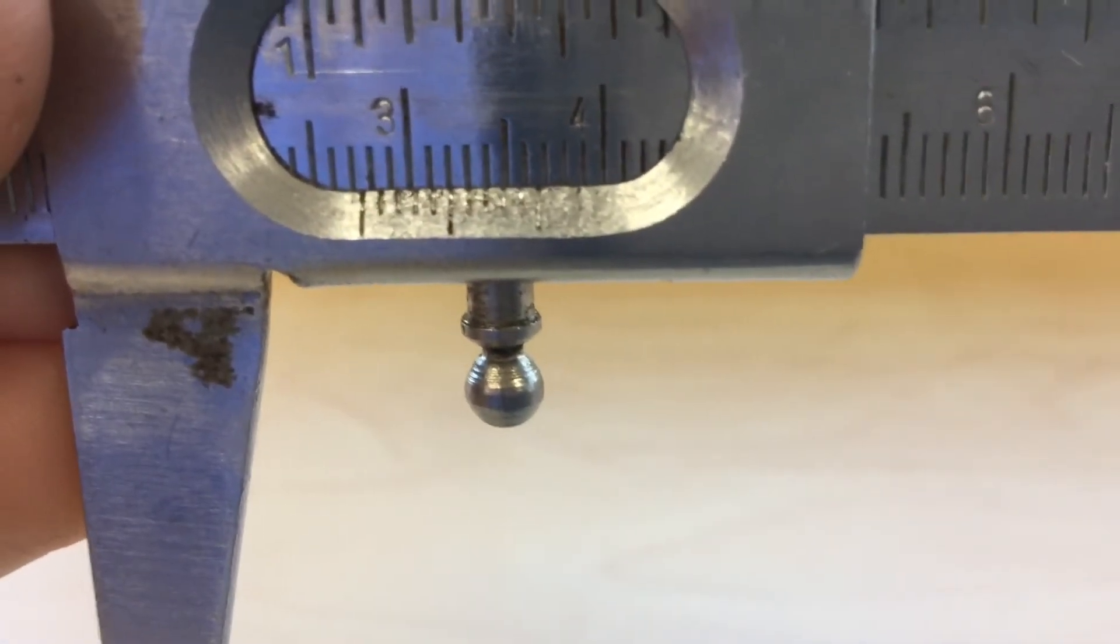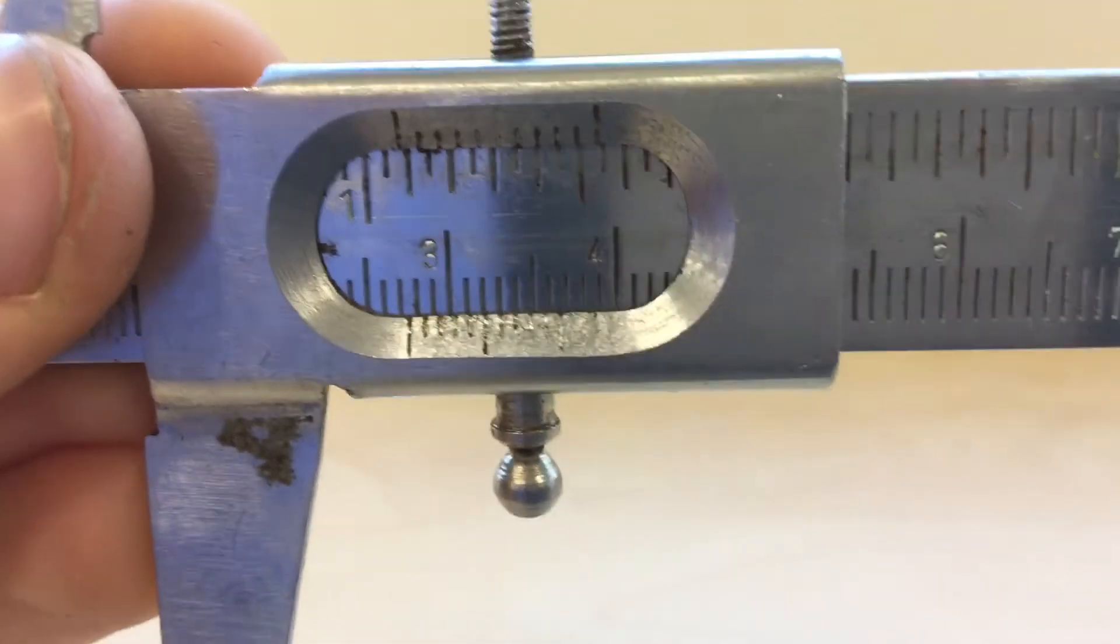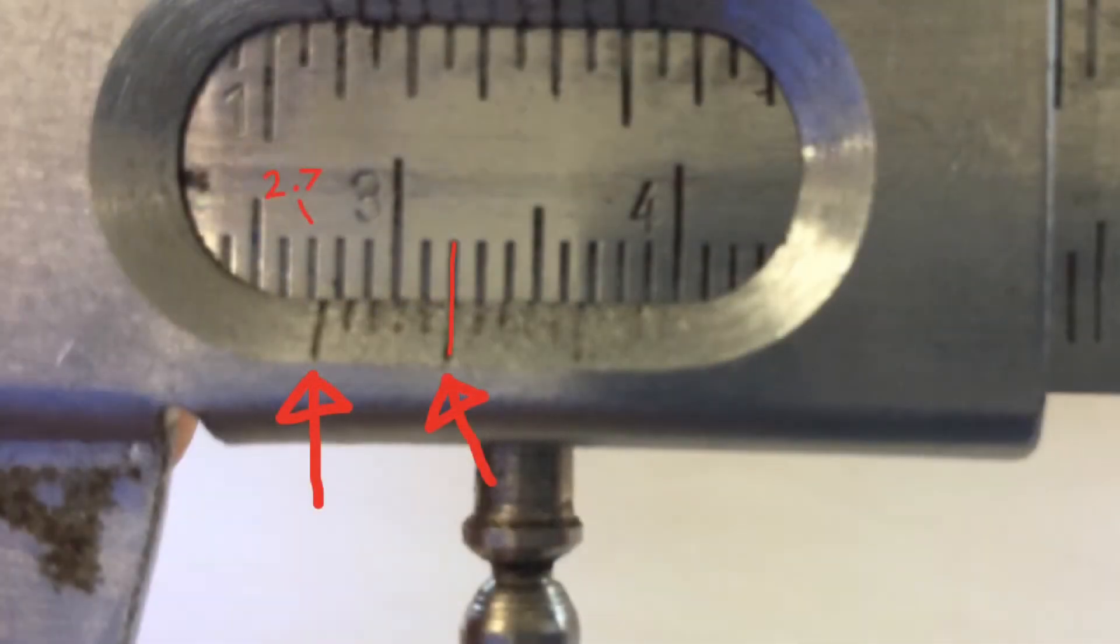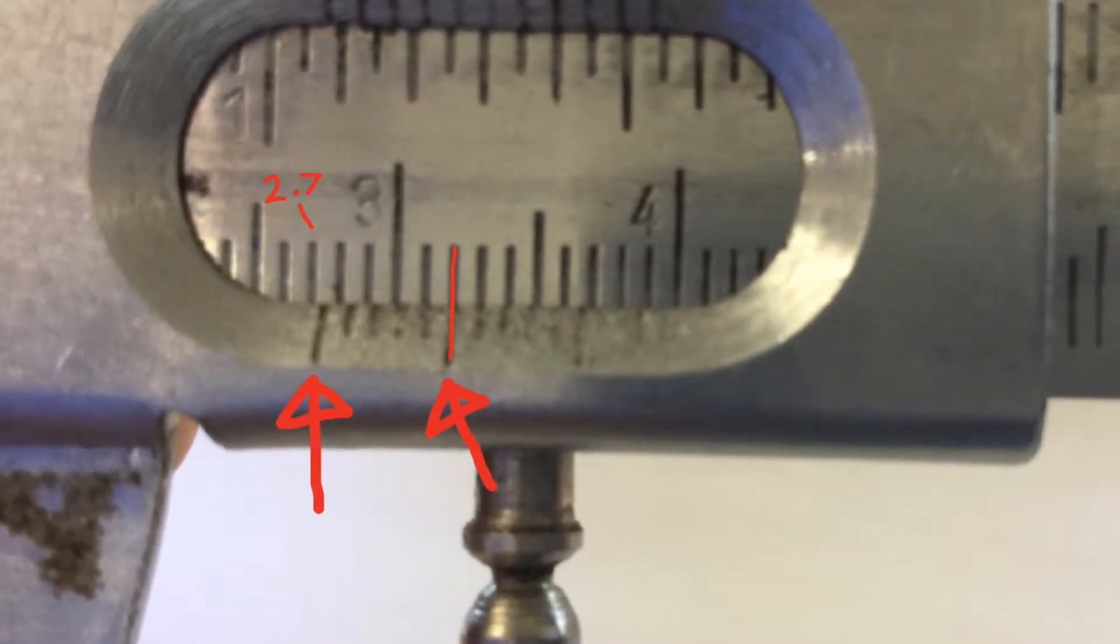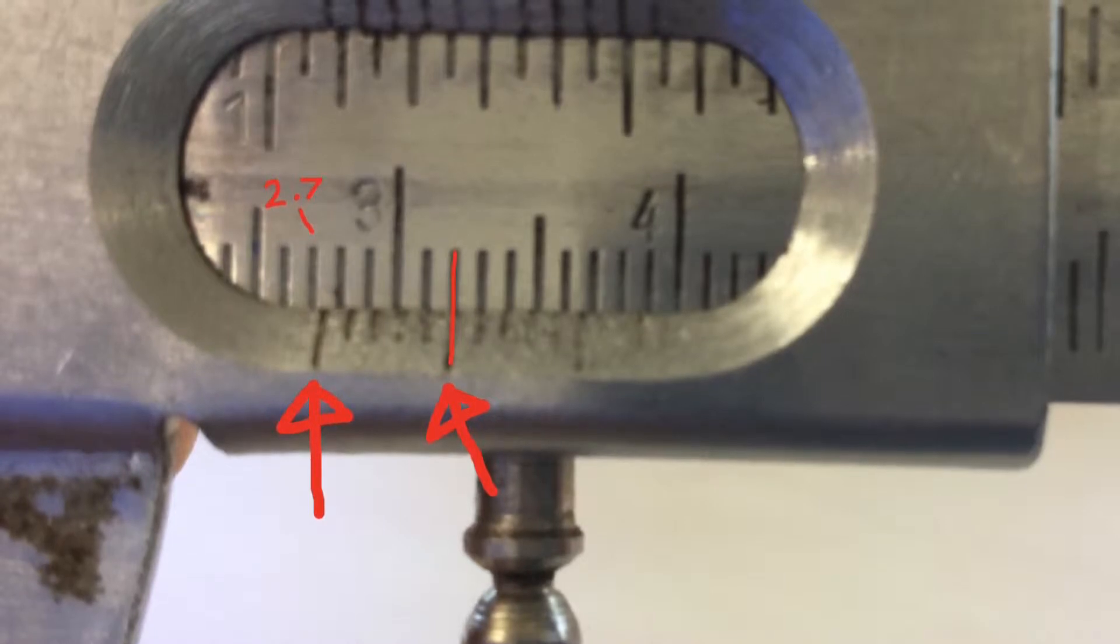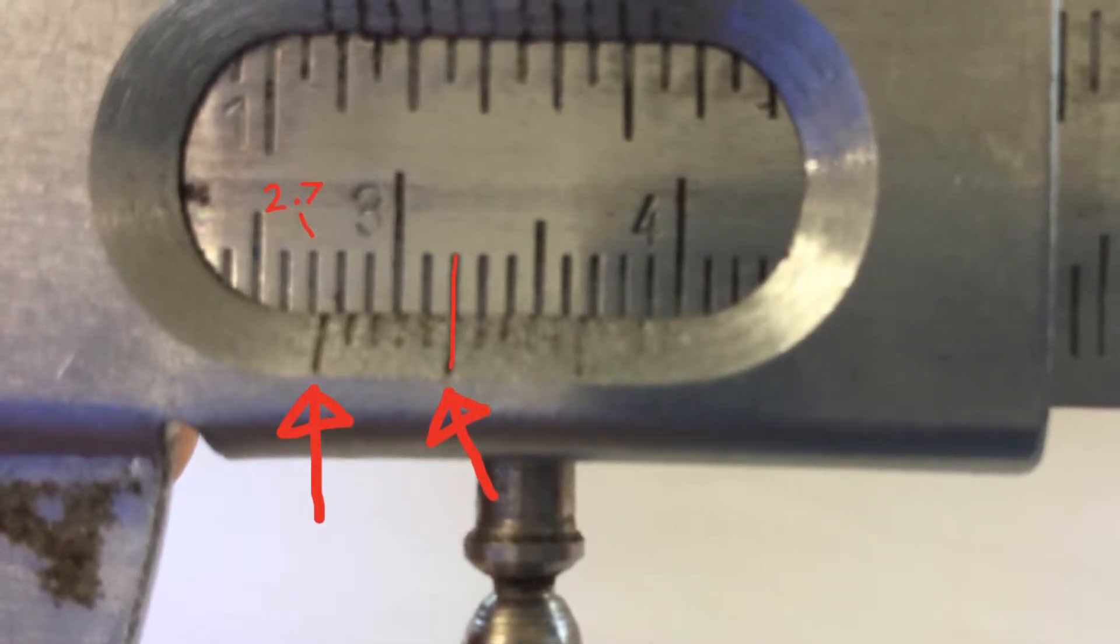Once you have slid the object you were measuring out, you can read the measurement. To read the measurement, you don't use the top lines, you only use the bottom lines that the arrows point to.